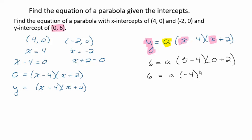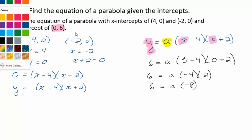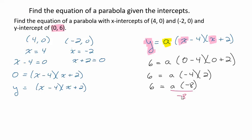All right? So we'll simplify what's in these parentheses here. We will do this multiplication. And then to solve for a, we're going to divide both sides by -8. And so we get our a value is -3/4.